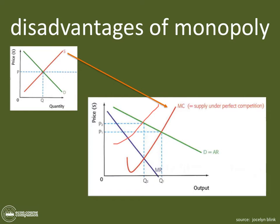Monopolies are not selling at a price most advantageous for society — they're maximizing profit, which is the theoretical goal, but a disadvantage for consumers. Monopolies are not productively or allocatively efficient, whereas in perfect competition there is both allocative and productive efficiency at the point where normal profits are earned. A monopoly can charge a higher price for lower output, and can also exercise anti-competitive behavior — pushing other firms out of the market simply through their dominance.